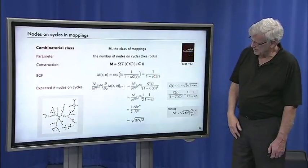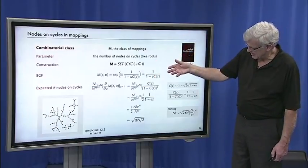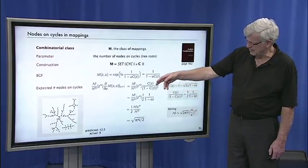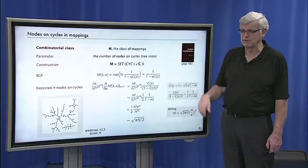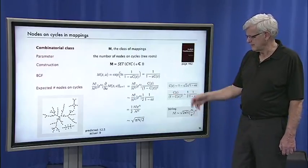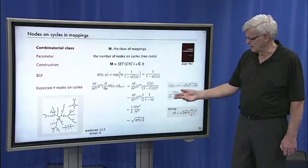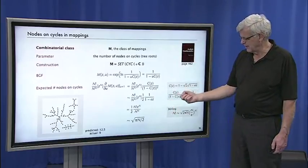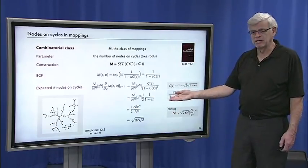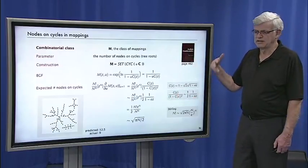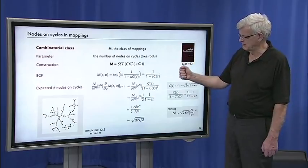And this graph, for example, it predicts that there'd be 12.5 nodes on cycles. And actually there's 9. And for bigger graphs, it'll be more accurate. These estimates are accurate to 1/n. But we could get more terms if we wanted because everything that we do is extendable to any asymptotic accuracy. So that's the use of singularity analysis to study mappings and their characteristics.